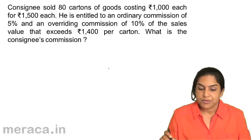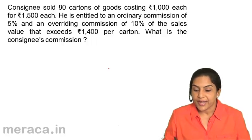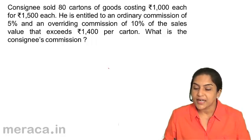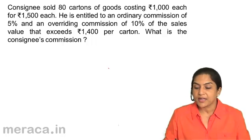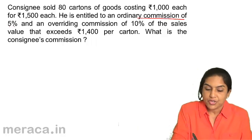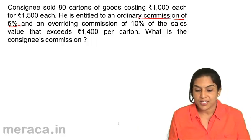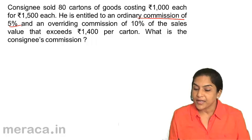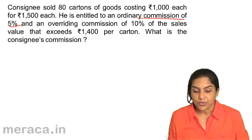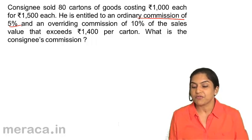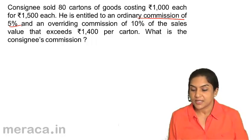Another commission problem. Consignee sold 80 cartons of goods costing 1,000 each for Rs. 1,500 each. He is entitled to an ordinary commission of 5% and an overriding commission of 10%. Ordinary commission of 5% on total sales, and overriding commission is 10% of the sales value that exceeds Rs. 1,400 per carton. What is the consignee's commission?